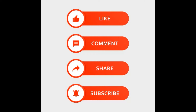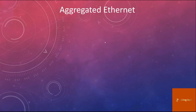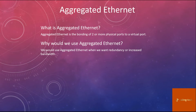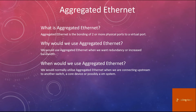Welcome to this presentation on aggregated ethernet interfaces in a Juniper JunOS environment and CLI interface. The first thing we have to look at is: what is aggregated ethernet? Aggregated ethernet is the bonding of two or more physical ports to a virtual port. We use it when we want redundancy or increased bandwidth, typically connecting upstream to another switch, a core device, or possibly a VM system. If it's to a core device, you'll likely have aggregated ethernet in both directions, downstream and upstream.